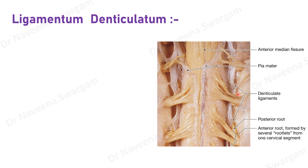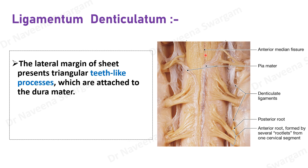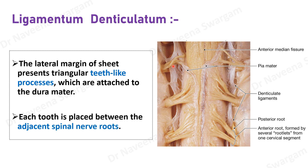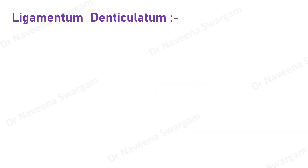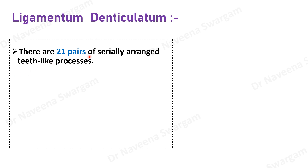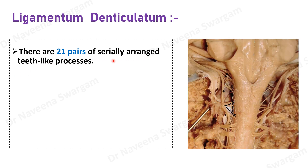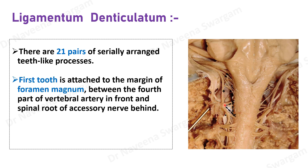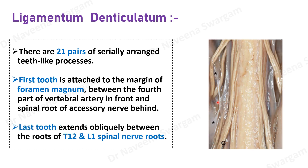The teeth are attached to the dura mater for better anchorage of the spinal cord, and each tooth is situated between adjacent spinal nerve roots. There are 21 pairs of such teeth, serially arranged one below the other. The first pair is situated above and attaches to the margins of the foramen magnum, related in front with the fourth part of the vertebral artery and behind with the spinal root of the accessory nerve. The last pair extends obliquely between the roots of T12 and L1 spinal nerves.